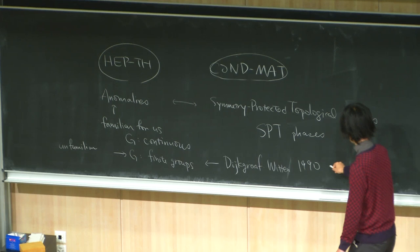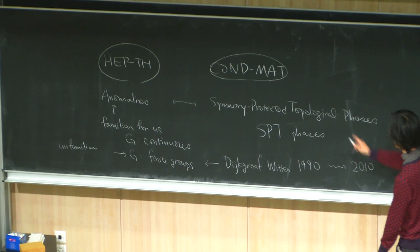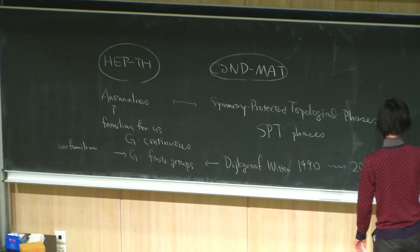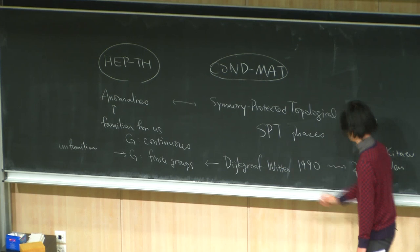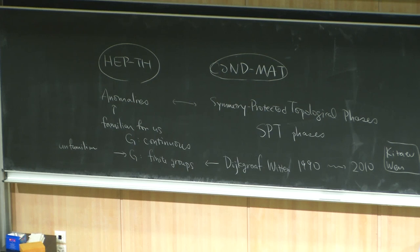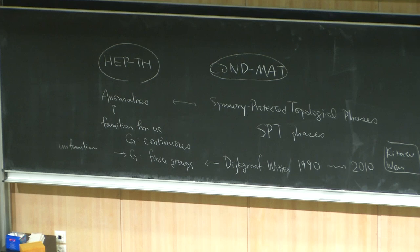Suddenly, around 2010, condensed matter physicists — including Wen and Kitaev — realized the physical significance of their constructions. These condensed matter physicists realized the importance of anomalies of finite groups and associated SPT phases, which I'm going to explain. Even later, starting around 2013 or 2015, we've been re-importing the developments on the condensed matter physics side back to the high-energy physics side.